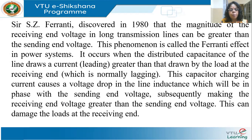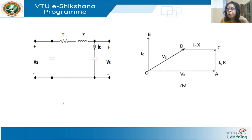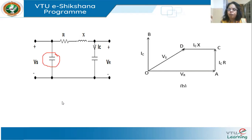This is best understood with a phasor diagram. Consider a line model where the line resistance and reactance are lumped, and the capacitance is split into two equal shunt capacitances — half at the sending end and half at the receiving end. This capacitance is nothing but the capacitance of the line itself, modeled as a lumped capacitor. Now let us draw the phasor diagram, starting from the receiving end.